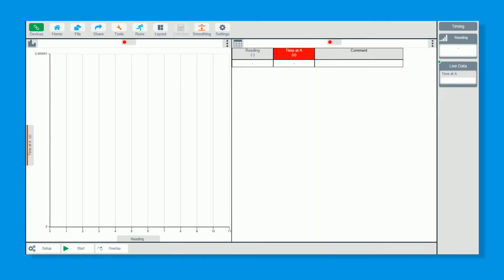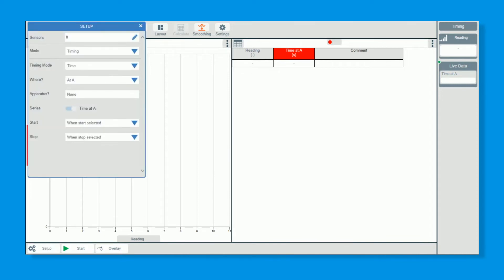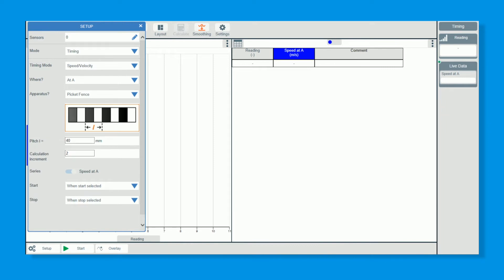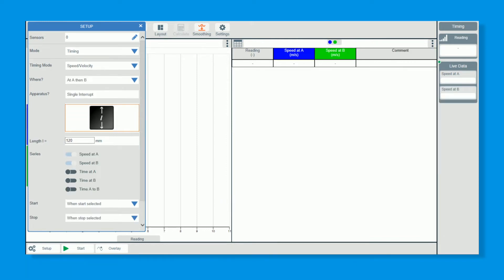I'm now going to go to timing. For Newton's second law we simply click on the setup down the bottom. We want to have velocity. So it's A then B. Not A or B or A to B. It's at A then B. Make sure you click the right one.